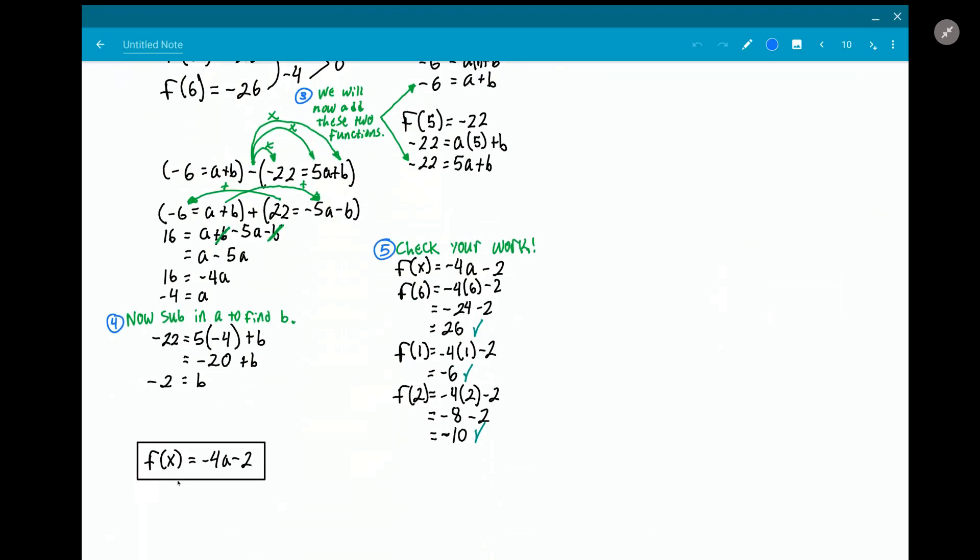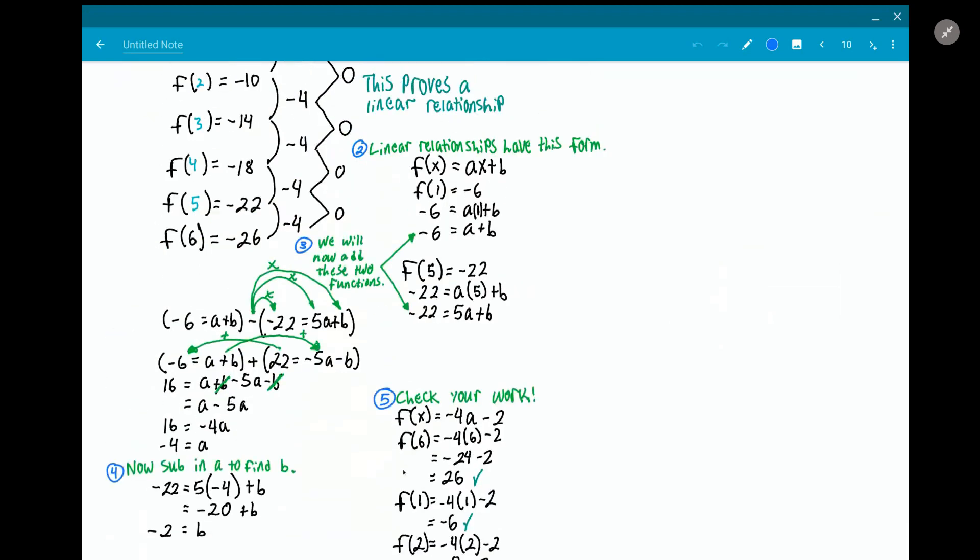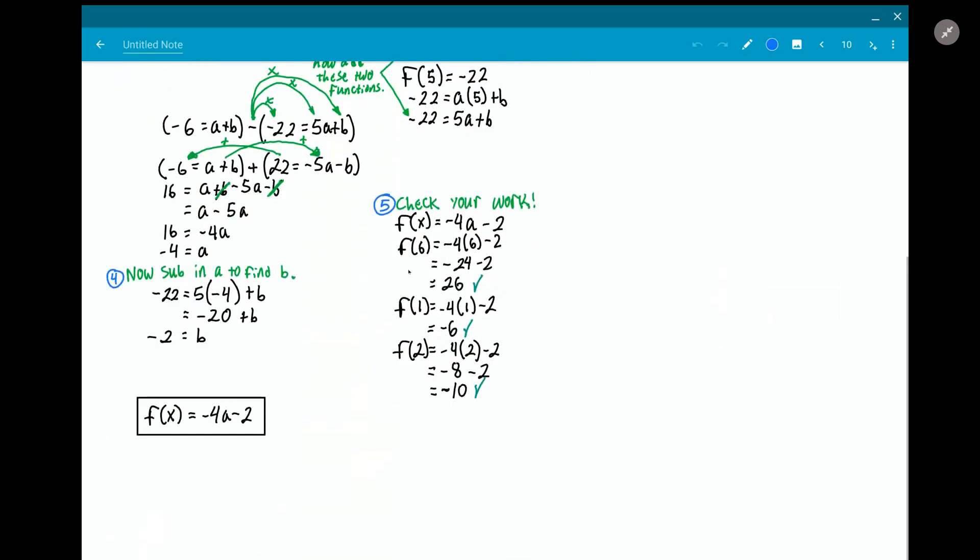But it's very important because you can usually find a way to do it without being right for all values. So you want to try it with a couple of the values on the list and see if it works. So let's go ahead and do that. f(x) = -4x - 2.